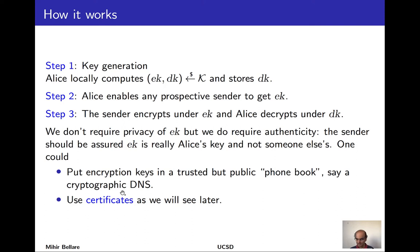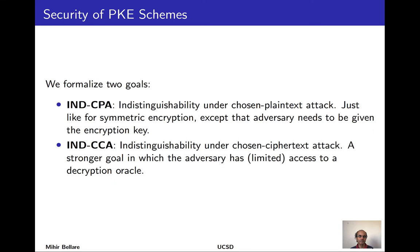As far as our study of the primitive of asymmetric encryption goes, we'll assume that the sender has a trusted copy of the encryption key. When it comes to security, we will start by formalizing an extension of the same IND-CPA goal we studied for symmetric encryption. This asks that encryption hide all partial information about the data; the novel element here is mainly that the adversary must be given the encryption key.